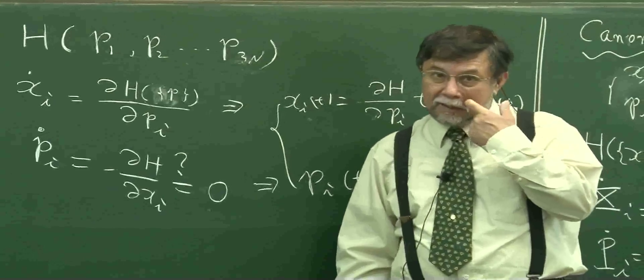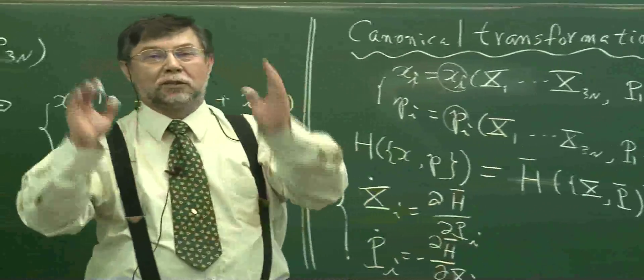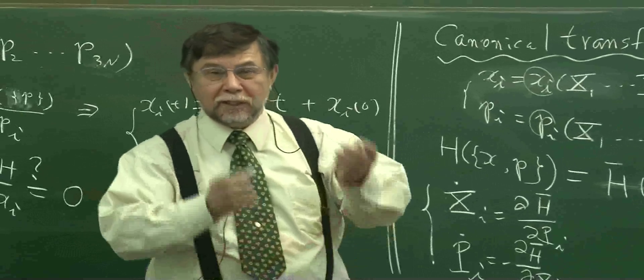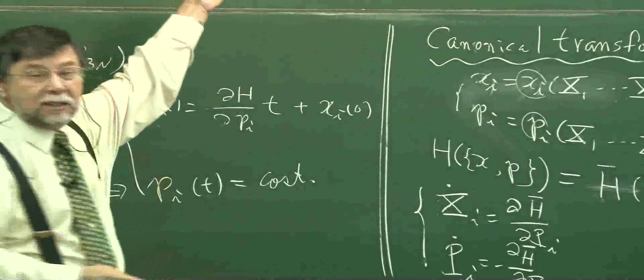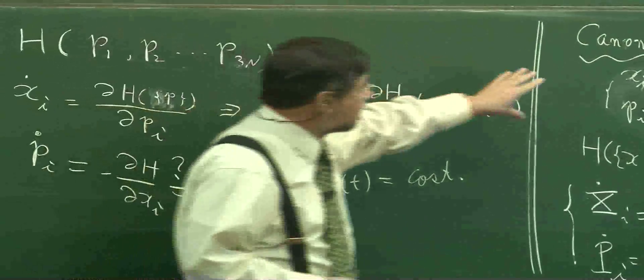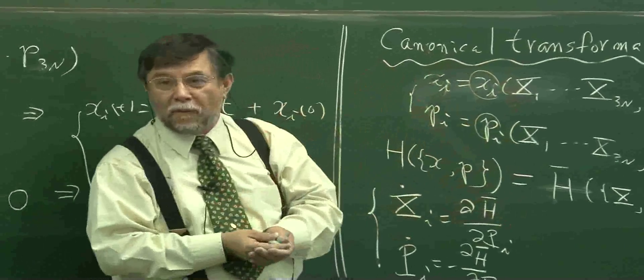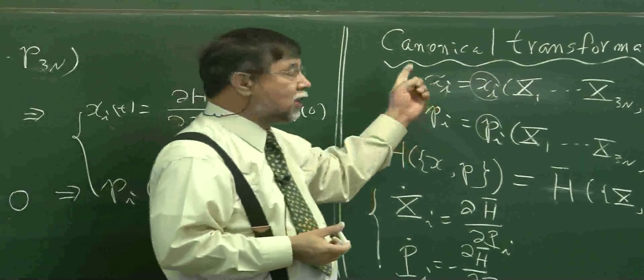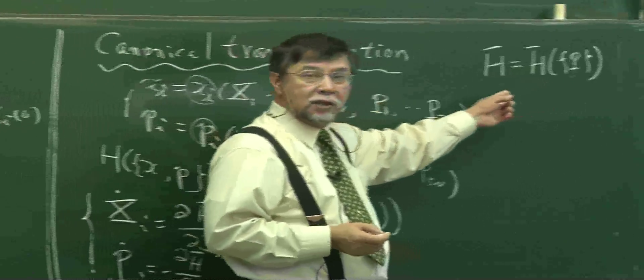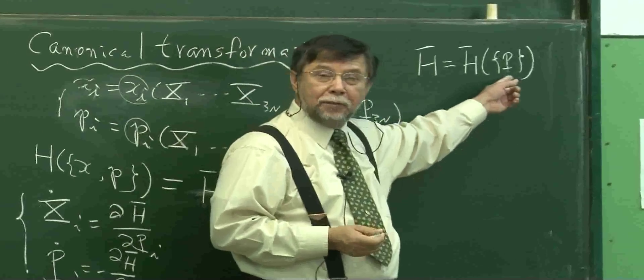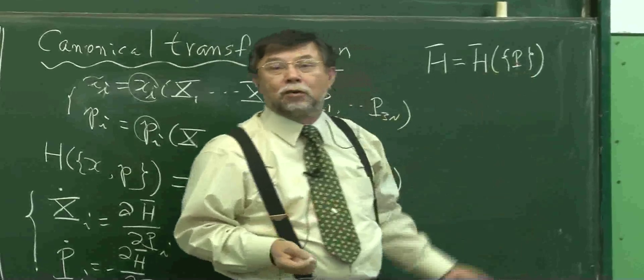Therefore, when you try to solve the equation of motion in a very complicated case, you don't directly integrate that equation of motion. Instead, you try to find a very nice class of transformation in such a way that the new Hamiltonian becomes only new type of momentum alone. Then you can solve it.